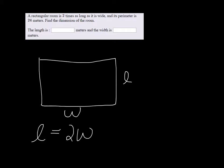And its perimeter, remember, perimeter is 2L plus 2W. That is equal to 24.